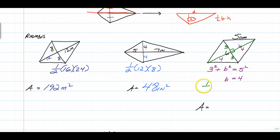So all you have to do now is one half of the full diagonal 6 times the other full diagonal 8 and you end up with 24 centimeters squared. All right, that's it. Plain and simple.